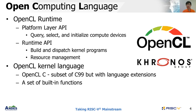OpenCL is composed of two components: OpenCL runtime and OpenCL kernel language. The OpenCL runtime includes a platform layer and runtime API. Platform layer APIs are used to query, select, and initialize the compute device, and runtime APIs are used to build and dispatch kernel programs and manage platform resources. The kernel must be written in the OpenCL kernel language, which includes a subset of C99 with some language extensions and built-in functions. Multiple instances of a kernel function can be executed in parallel.